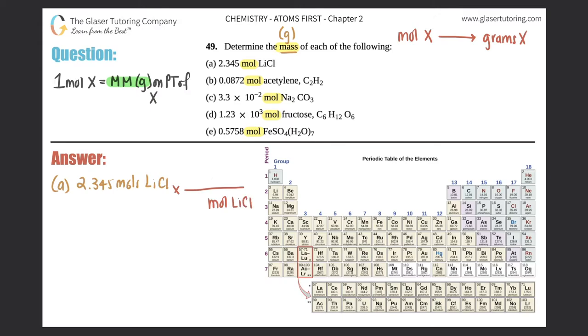So for A, we start with 2.345 moles of LiCl. So we're just converting. Anytime that we're converting, it's always times by the ratio. You put the unit that you don't want on the opposite side, so moles of LiCl will go on the bottom and grams, because that's the mass of LiCl, will go on the top.